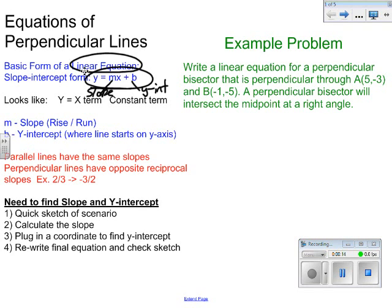m stands for your slope, or your rise over run, and b is your y-intercept, or where the line crosses the y-axis.